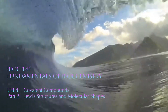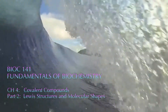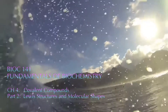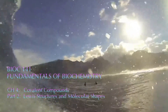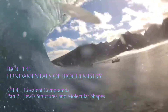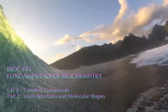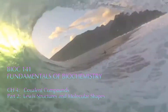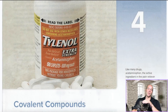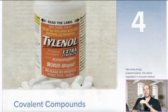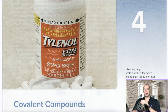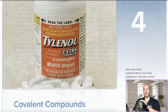Aloha Biochem. In the second lecture of chapter four, we take a look at Lewis structures and molecular shapes. We're continuing chapter four — this time we're going to look at some more complex covalent compounds, examine their Lewis structures, and determine their molecular shapes.